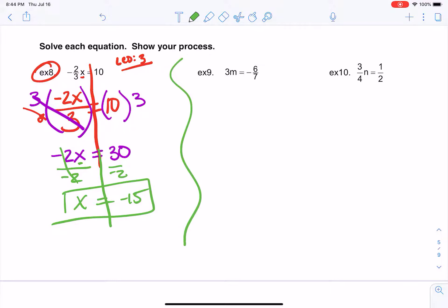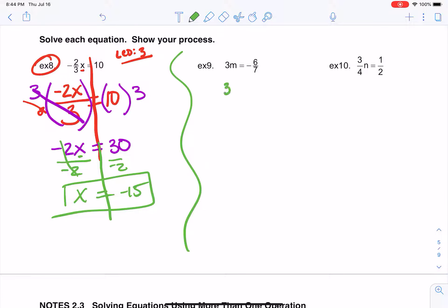Okay, let's try example number 9. So again, I've got a fraction here. When I talk about moving things to the top, I'm just going to move that negative up to the top. So I'm going to rewrite this. 3m equals negative 6 over 7.